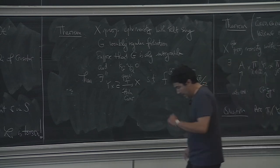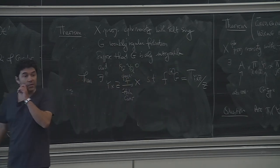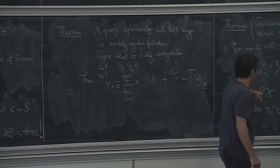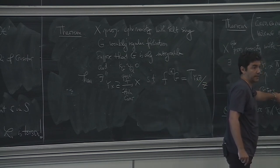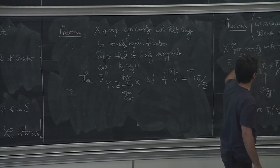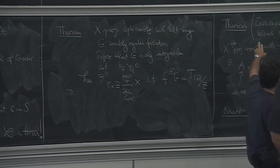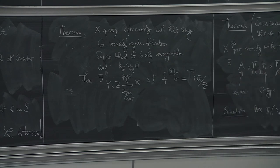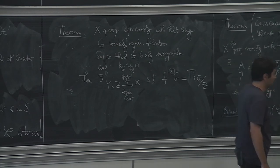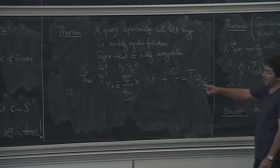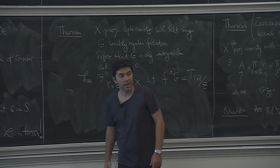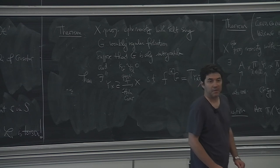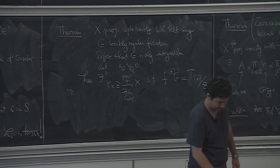The fact that the factors are of Calabi-Yau type or irreducible holomorphic symplectic type follows again from the analytic part by Greb, Guenancia, Kebekus — because as soon as you know the holonomy group, you are done. You have only two types. So as soon as the variety is split, you apply again Greb, Guenancia, Kebekus, and you have the result. Thank you very much.